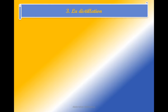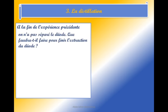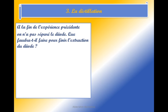La distillation. À la fin de l'expérience précédente, on n'a pas encore séparé le diiode : on a obtenu une solution diiode-cyclohexane. Que faudra-t-il faire pour finir l'extraction du diiode ?